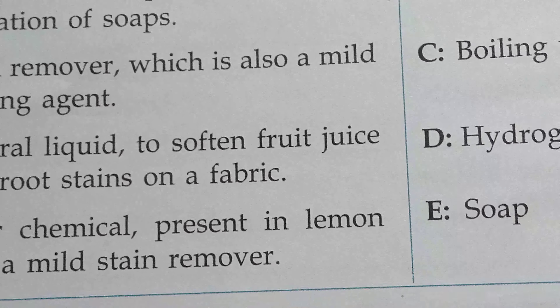A natural liquid used to soften fruit juice or beetroot stains on fabric — the answer is boiling water. And the last one: a sour chemical present in lemon juice that acts as a mild stain remover — the answer is citric acid.